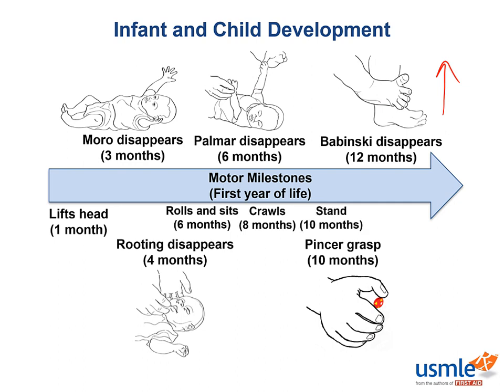Around nine to ten months, babies also begin to stand. And around one year, the babies start to walk, although this can take up to 18 months. One tool to remember this is by thinking about the number one as though it is the baby standing up to get ready to walk.